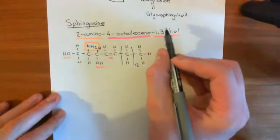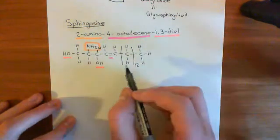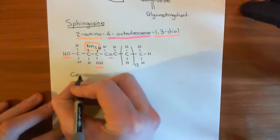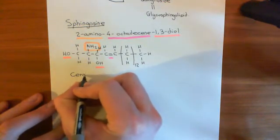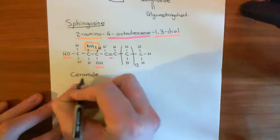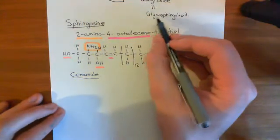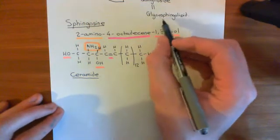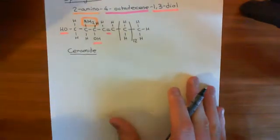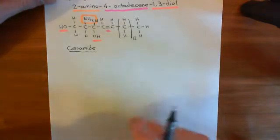Before we can discuss what a glycosphingolipid is, we also need to first discuss what a ceramide is, because a glycosphingolipid is a modified ceramide — it's a sphingolipid where the extra group is a sugary molecule. So let's discuss what a ceramide is.